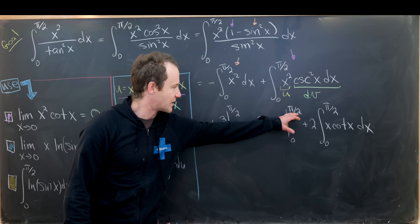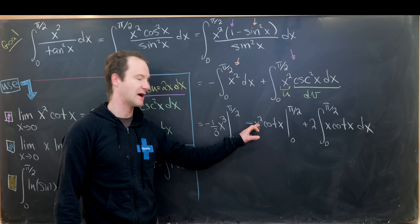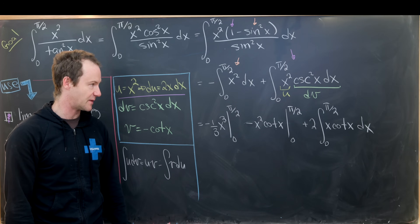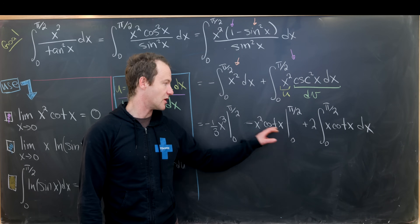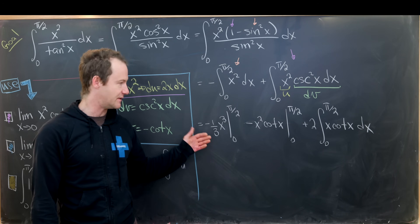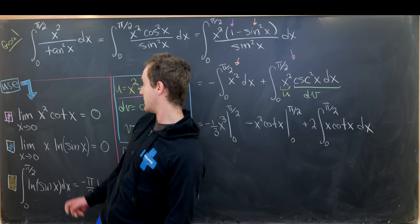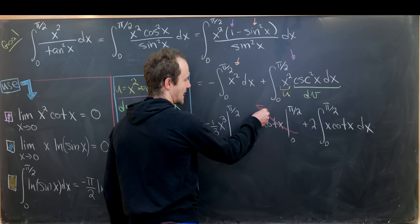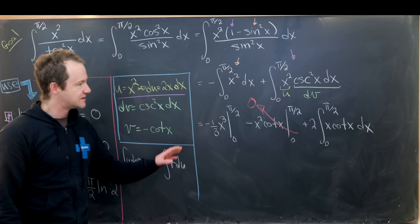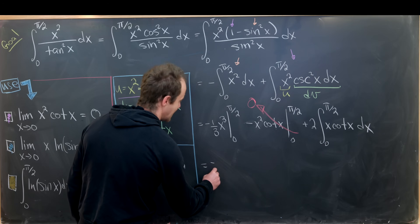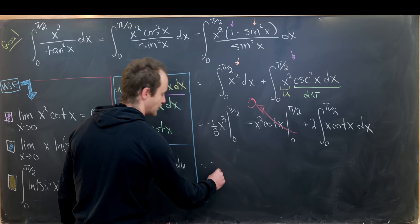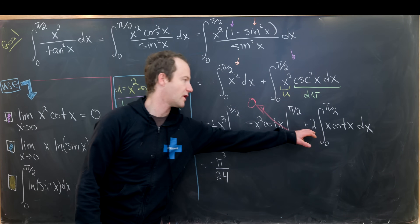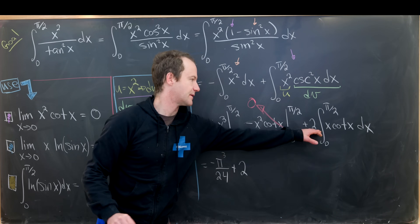Evaluating the boundary term x²·cot(x): at x = π/2, cot(π/2) = cos(π/2)/sin(π/2) = 0, so that part vanishes. At x = 0 we need a limit — this is exactly the first limit we proved, which equals 0. So the boundary term is 0 altogether, leaving −π³/24 plus 2 times the remaining integral.